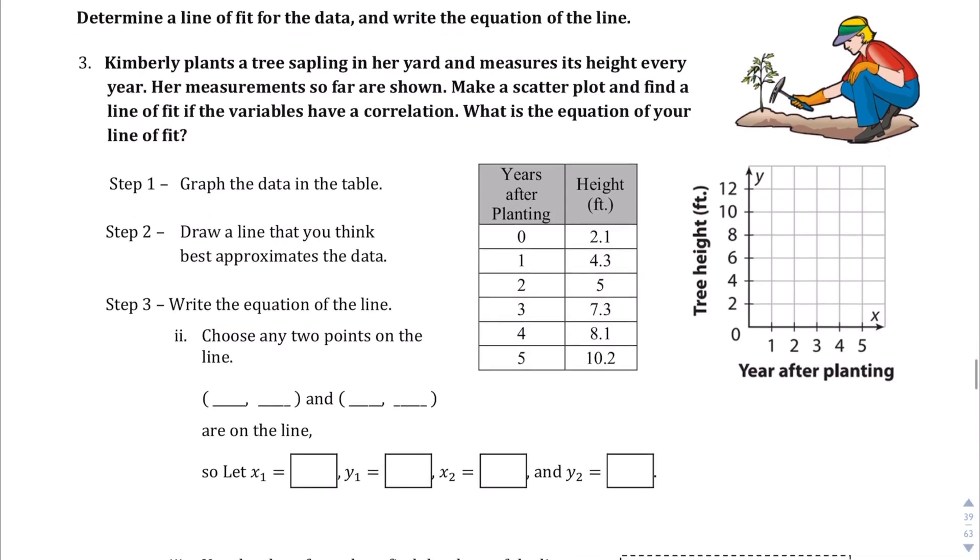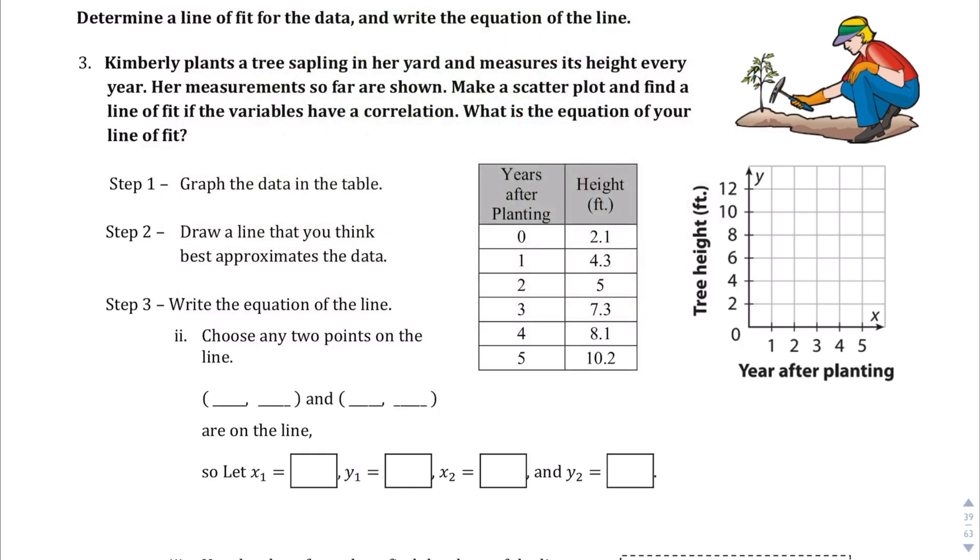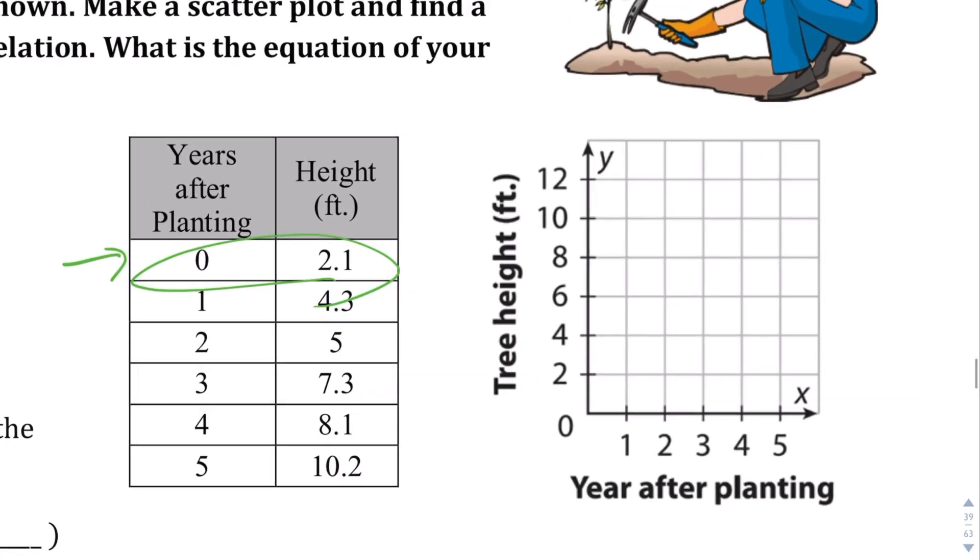The only difference here is that we're going to now determine the slope of that line of best fit and use the slope formula to figure that out. In question number three, Kimberly plants a tree sapling in her yard and measures its height every year. She made a table of those heights. We're going to make a scatter plot, create the line of best fit, and find that equation of the line of best fit. Let's go take a look at step one, graph the data in the table. We're going to start with zero and 2.1. At year zero, the tree height was at 2.1. At year one, 4.3. At year two, about 5. At year three, 7.3. At year four, 8.1. At year five, 10.2.